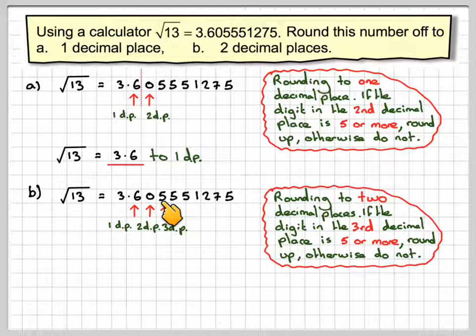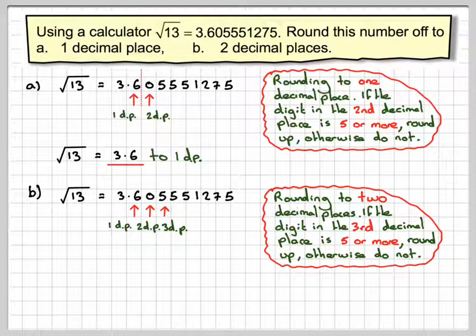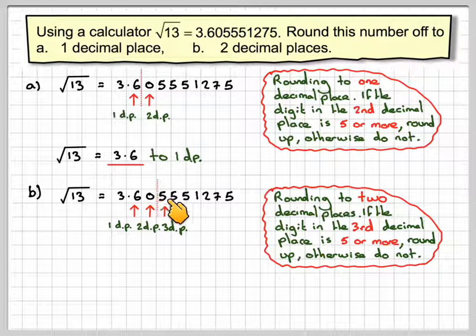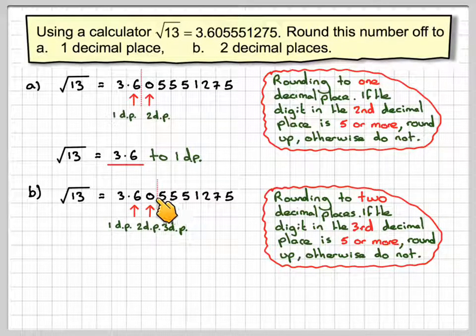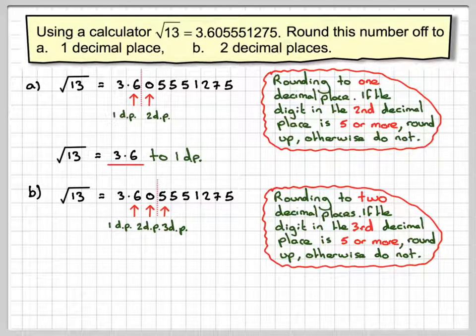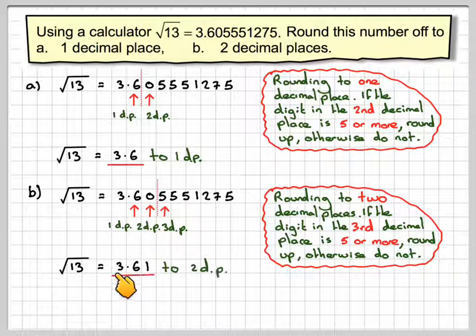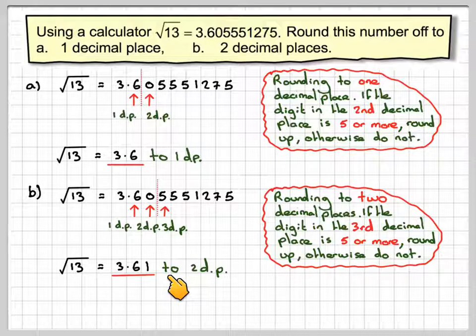So in this case, this is a 5. We'll draw a little line in there. So this is 5, therefore that will make that 0 a 1. So the square root of 13 will be 3.61, correct, to two decimal places.